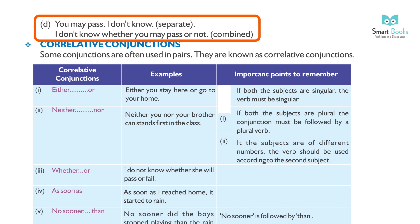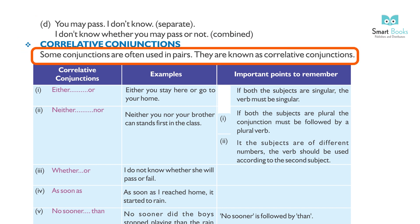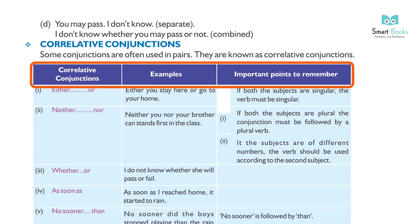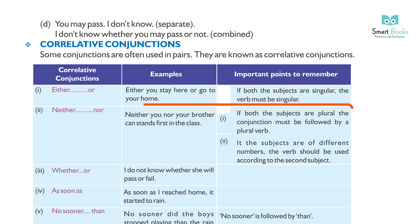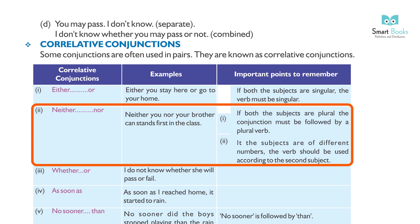Correlative conjunctions — some conjunctions are often used in pairs; they are known as correlative conjunctions. Important points to remember: 1. Either...or — Either you stay here or go to your home. If both subjects are singular, the verb must be singular. 2. Neither...nor — Neither you nor your brother can stand first in the class. If both subjects are plural, the conjunction must be followed by a plural verb.